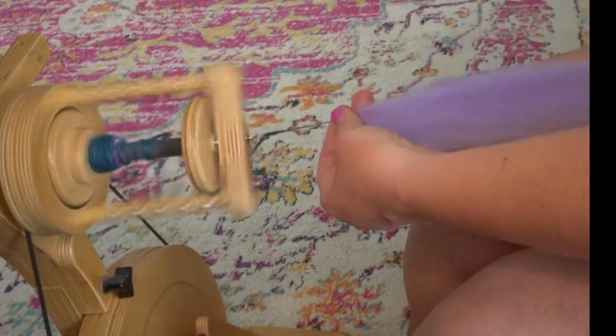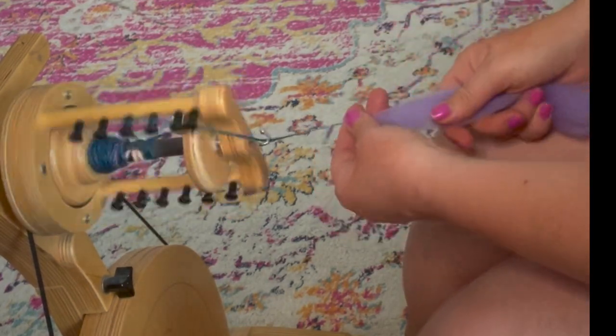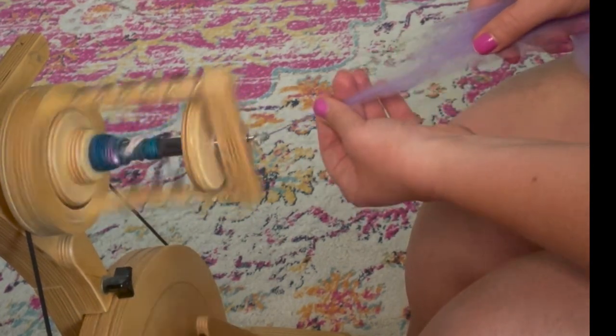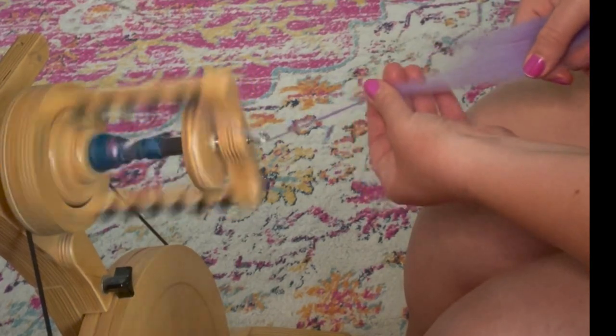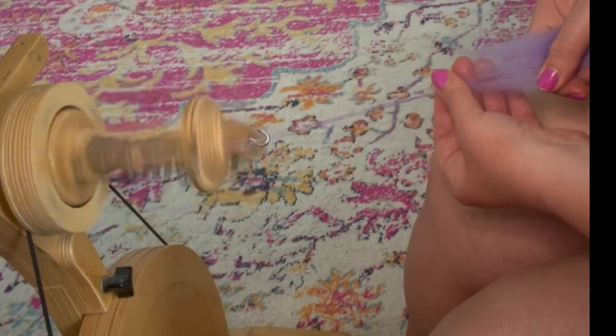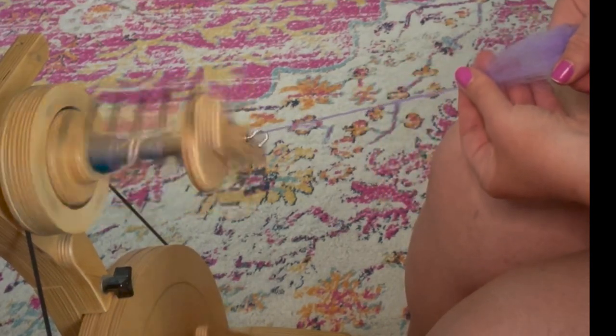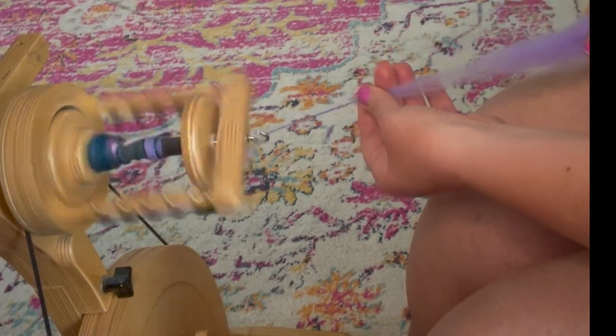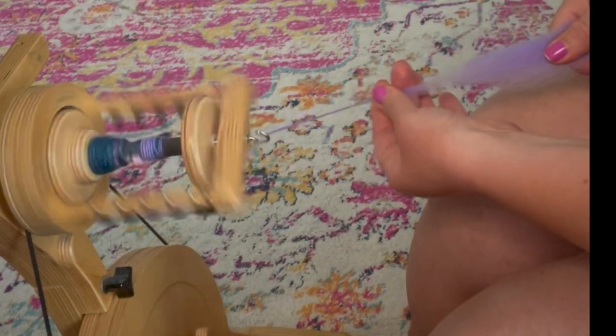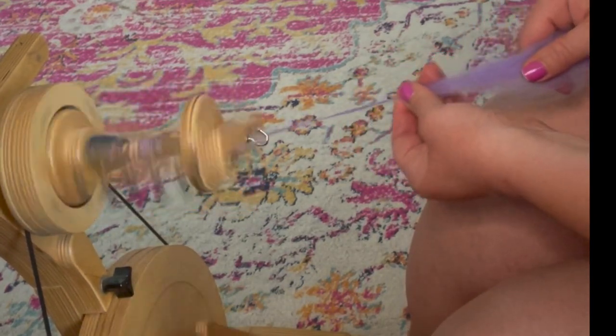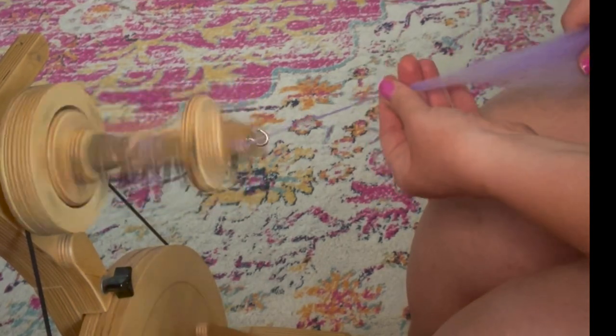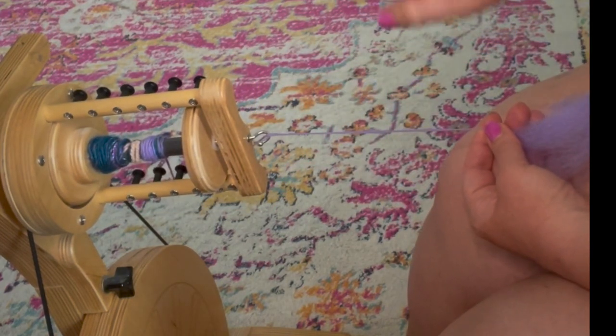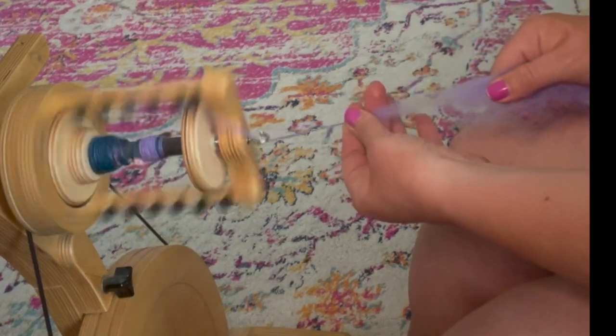For worsted style spinning, it's a smaller motion with your hands. You're going to pull forward and then draft back: pull forward, smooth back, pull forward, smooth back. What that's doing is pulling all the fibers that are already in a nice straight line, making sure they're staying in a nice straight line, and then just pulling the twist back on it. The nature of getting twist in your fiber means there's going to be twist, but instead of keeping it fluffy with a spiral effect like woolen, with worsted you're really trying to compact the fibers.